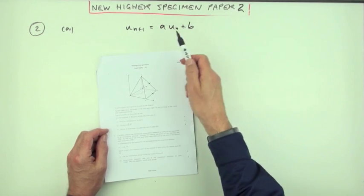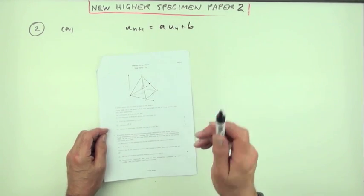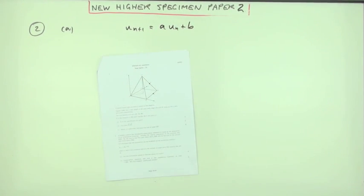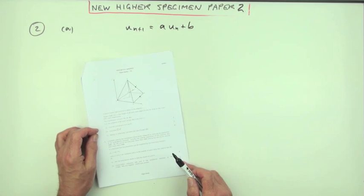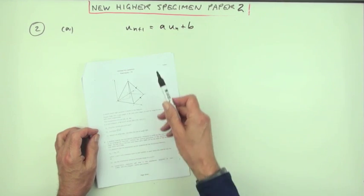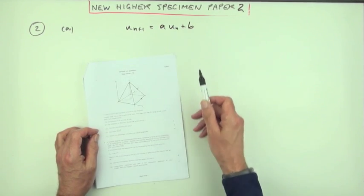Question 2 then from paper 2 of this new higher specimen paper, a recurrence relation. It's not been there for a while. What have you got? One of the standard big worded questions there. It's believed a population can be modeled with this linear recurrence relation.